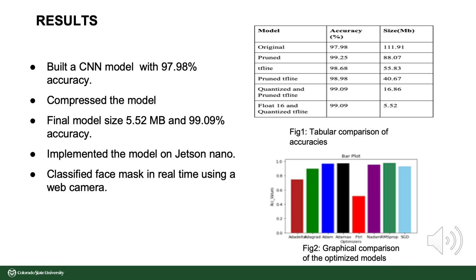Secondly, the pruned model is converted into a TensorFlow Lite model, which reduces accuracy to 98.68% and further reduces size to 55.83 MB. A trimmed TFLite model is created by converting the given model to TensorFlow Lite, achieving an accuracy of 98.98% and a smaller size of 40.67 MB. The quantized and pruned TFLite model is created after further compression, yielding an accuracy of 99.09% and a size of 16.86 MB. Finally, with a decreased model size of 5.52 MB, the total accuracy attained is 99.09%, known as the Float16 quantized TFLite model.